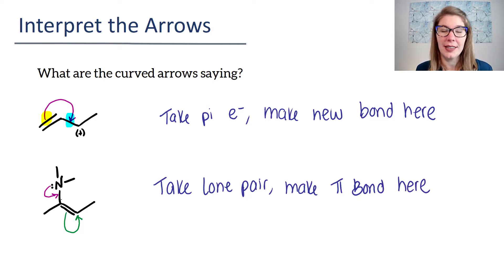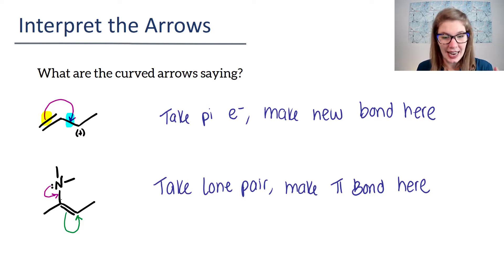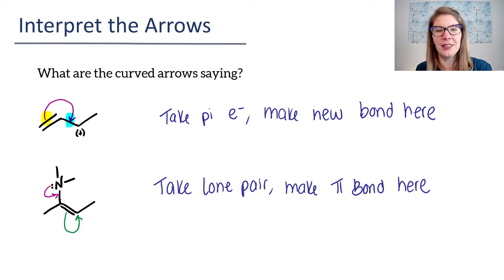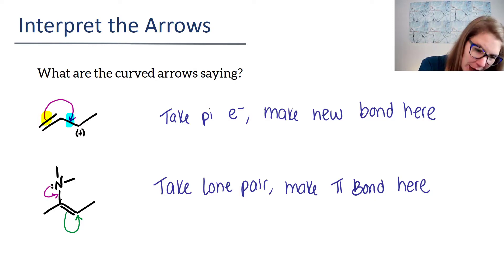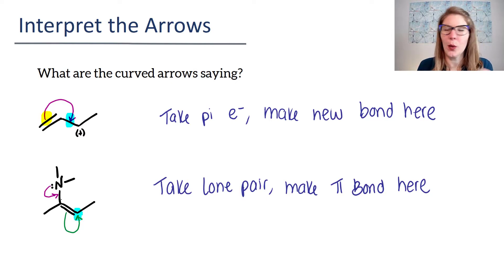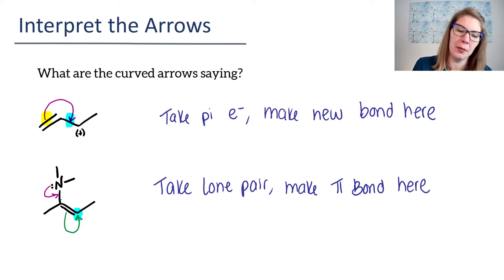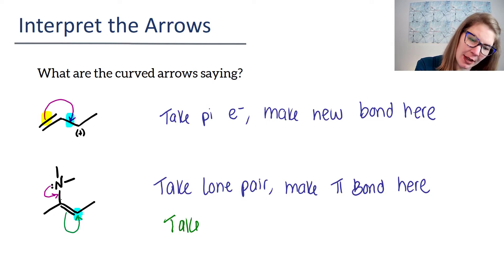The first arrow — the pink one — is saying take lone pair and make pi bond here. The green bond is saying take this pi bond and put the lone pair on that carbon. This one's a little newer; we don't see it as often as make new pi bond. Notice how we're pointing to the carbon, not between two atoms. When you have an arrow pointing to an atom, you're saying put a lone pair on that atom. So this is: take pi bond and put lone pair on carbon.